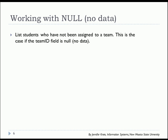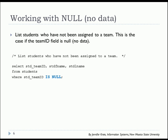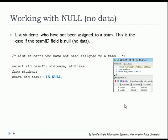You can look for NULL, as in no data. In this case we'll see if we have any students that have no team ID — in other words, they have not been assigned to a team. So our SQL statement is SELECT student team ID, first name, last name from the students table, WHERE student team ID IS NULL. The result is we have two students, Carla and Teresa, that are not assigned to a team.